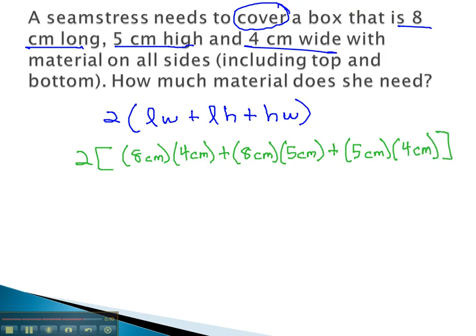And now we have a large order of operations problem. Inside parentheses, we'll multiply first. So we have 2 times, 4 times 8 is 32 square centimeters, 5 times 8 is 40 square centimeters, and 5 times 4 is 20 square centimeters.